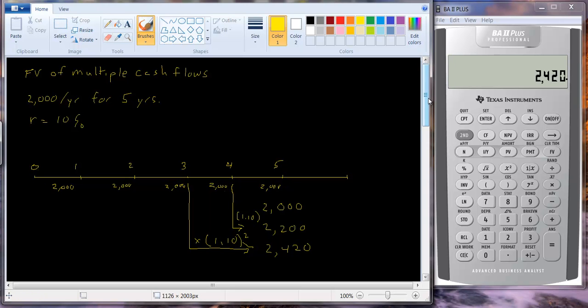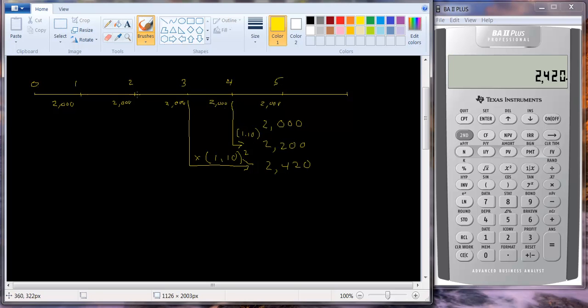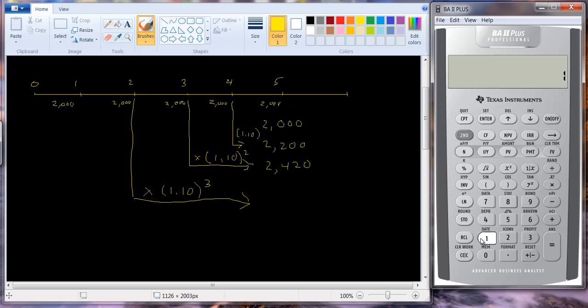Our year two cash flow is going to grow one, two, three periods. So let's draw down here and across. And so we're going to multiply that times 1.10 cubed. That's going to be 1.1 raised to the third power times $2,000, and so we get $2,662.